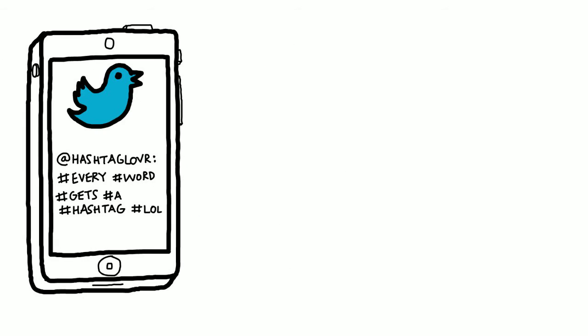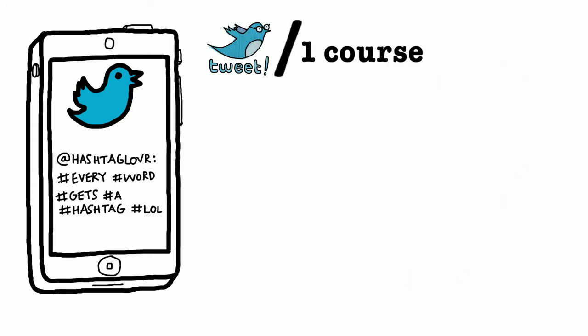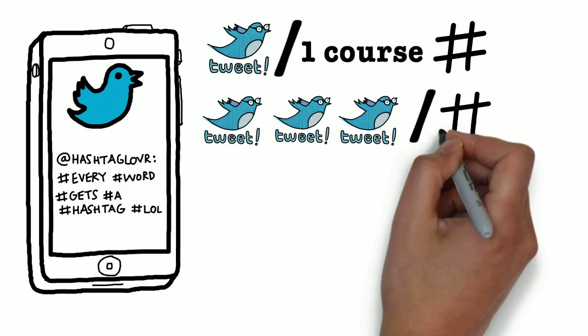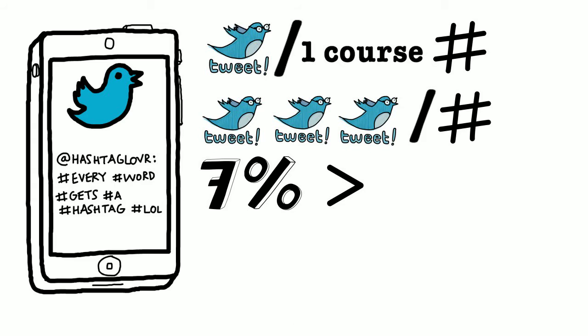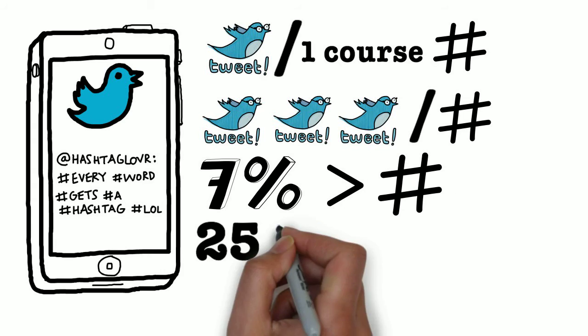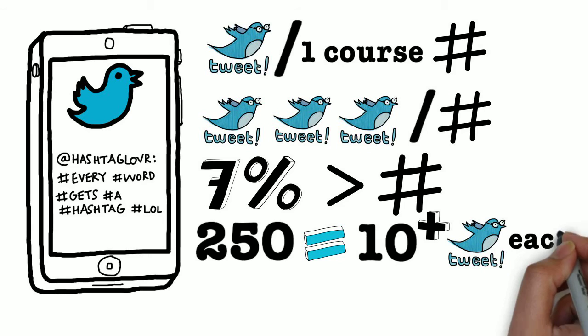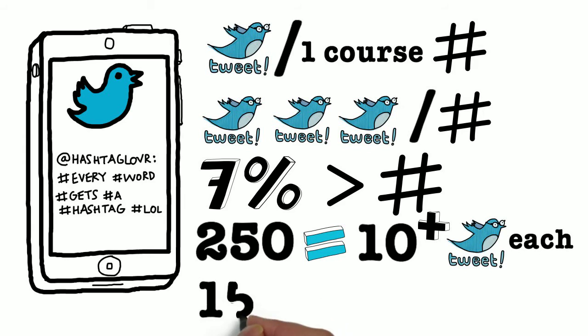Most accounts use hashtags in sporadic ways. The median user contributed one tweet to one course hashtag. On average, users contributed about three tweets to one hashtag. Very few users, around 7%, contributed to more than one hashtag. About 250 accounts contributed 10 or more tweets each, and these accounts were responsible for about half of the tweets posted.